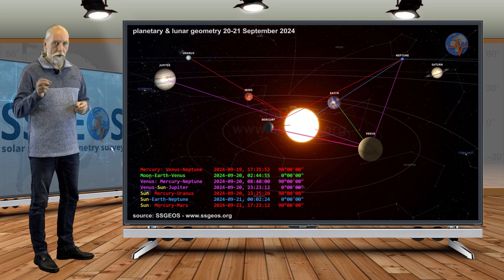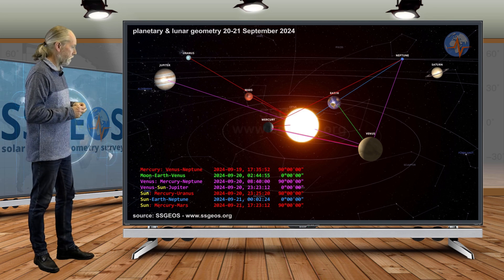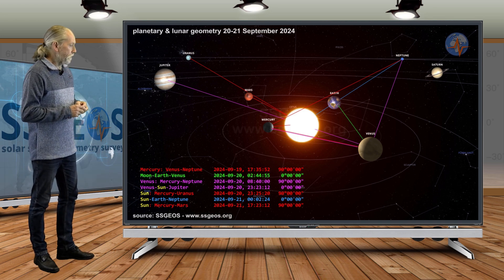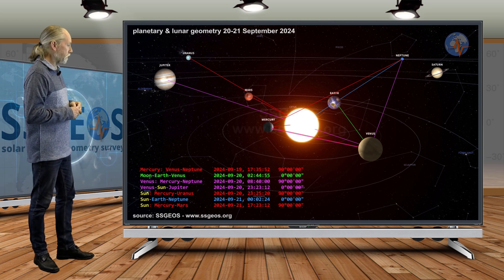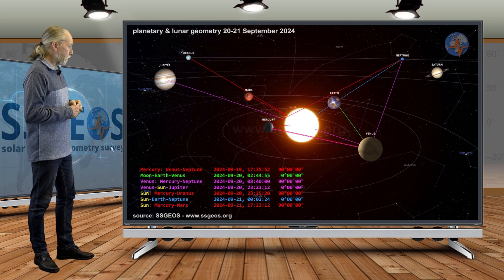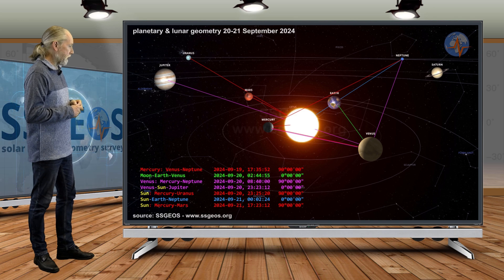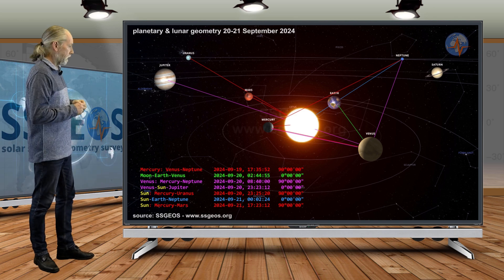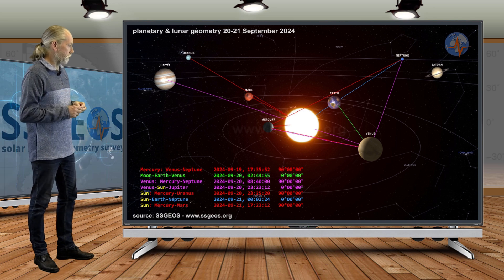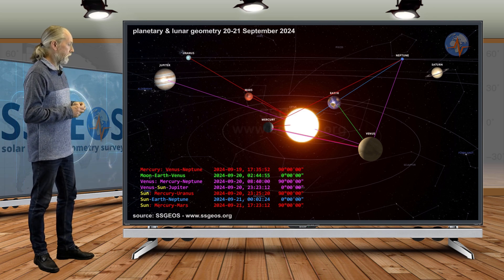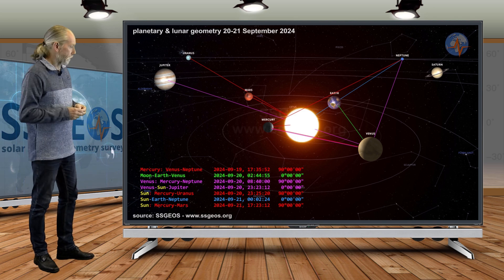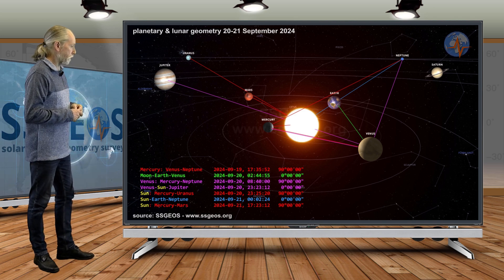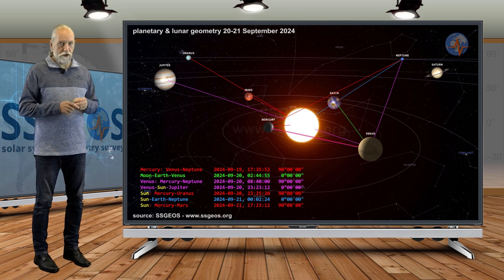And then the Sun is going to play a major role here because the next four geometries will involve the Sun. Venus, Sun, Jupiter, that is a conjunction. Then we have Sun, Mercury, Uranus in a right-angle geometry. Sun, Earth, Neptune in a conjunction. And that's all later on the 20th and early on the 21st. And then also Sun, Mercury, Mars in a right angle. So the Sun is playing a major role.